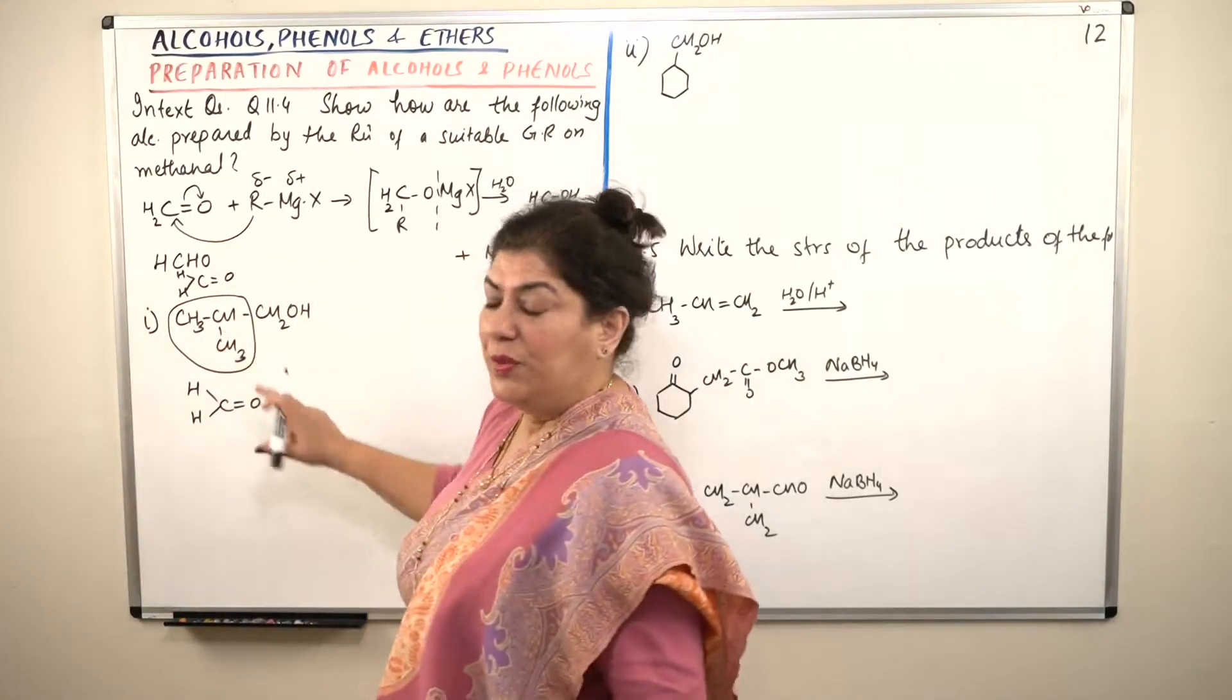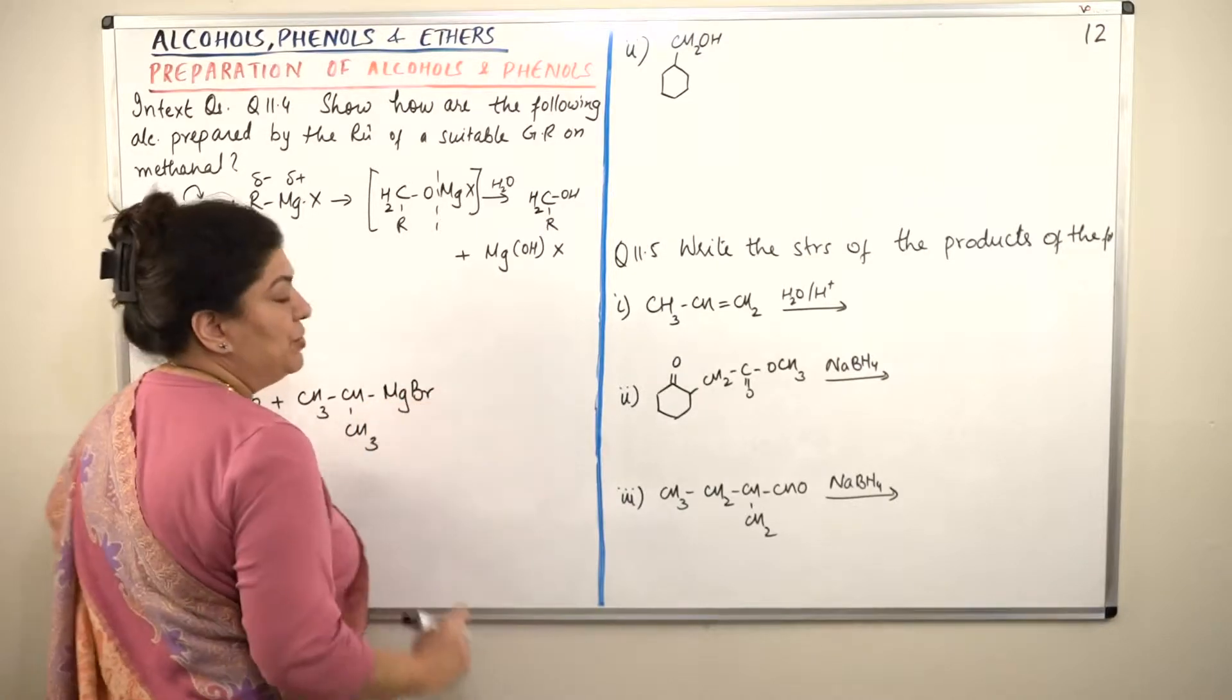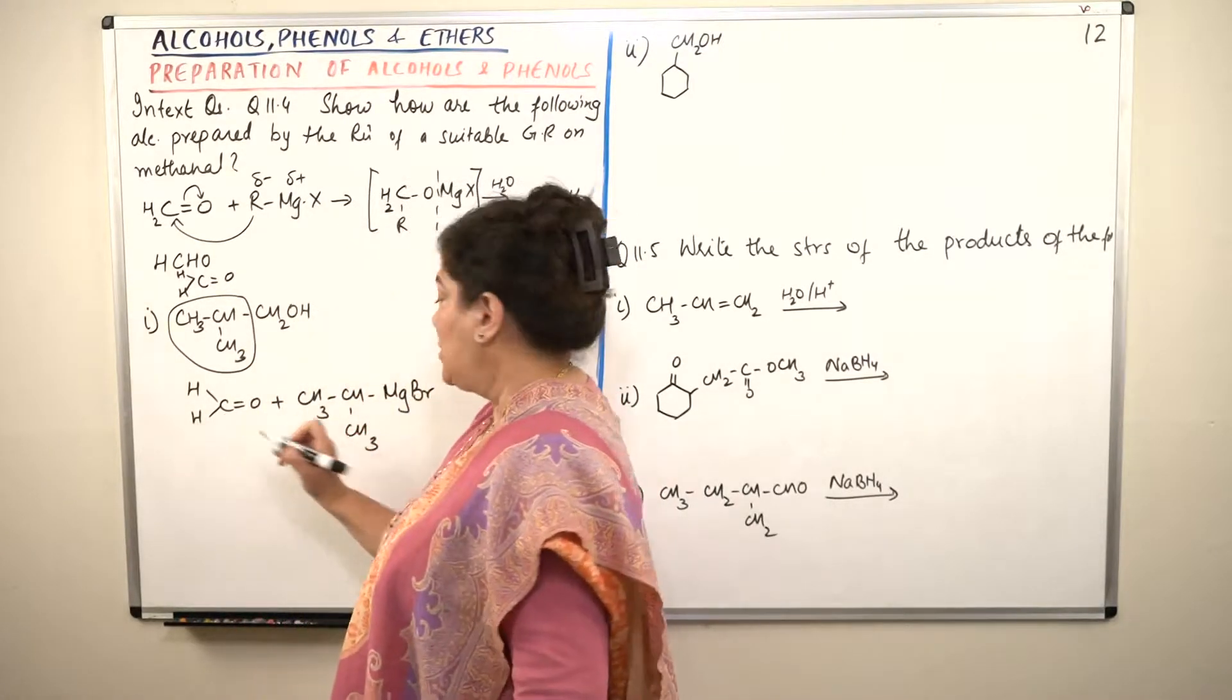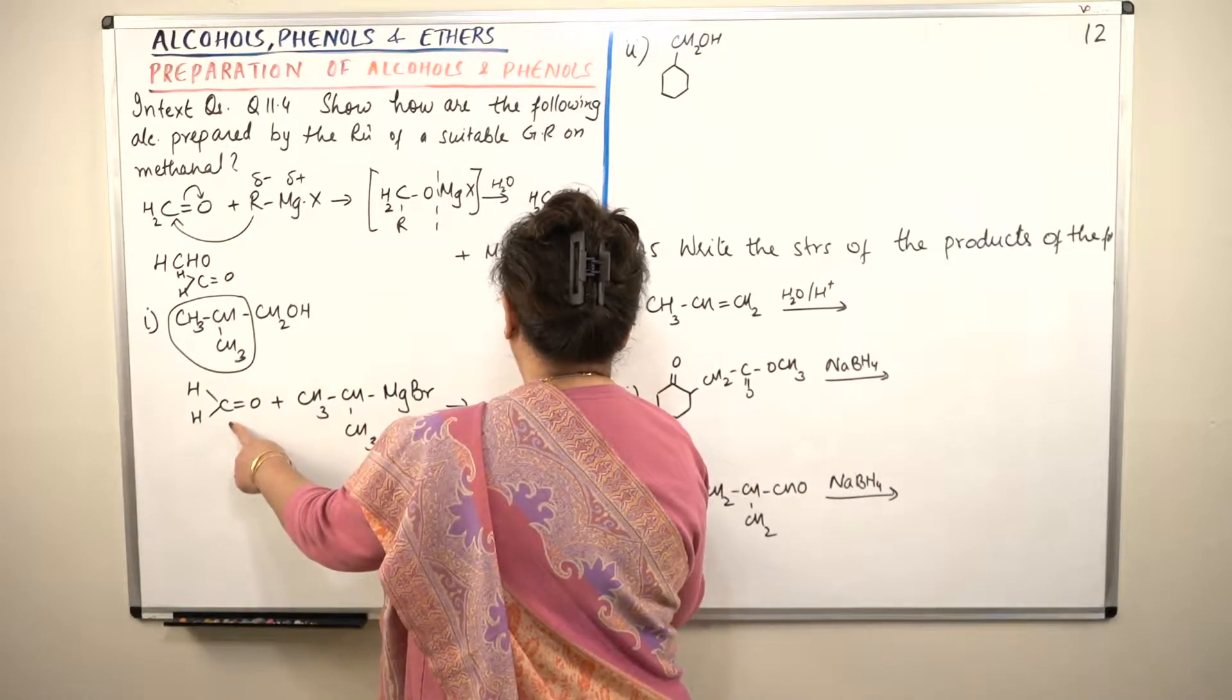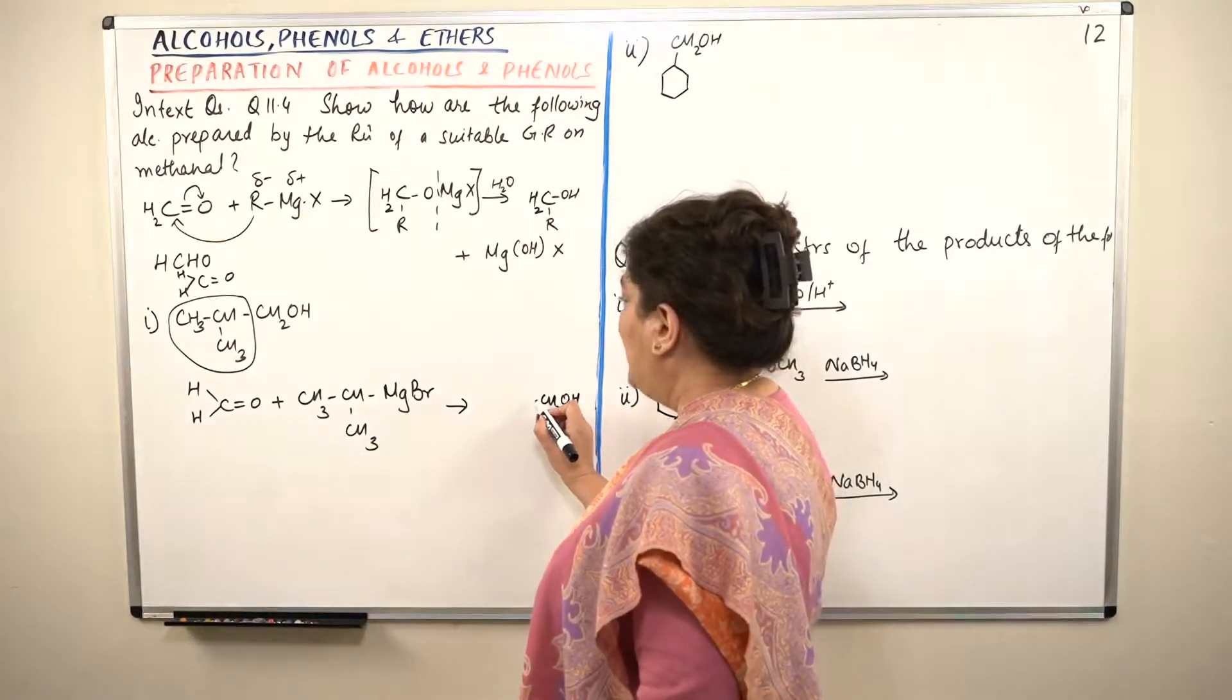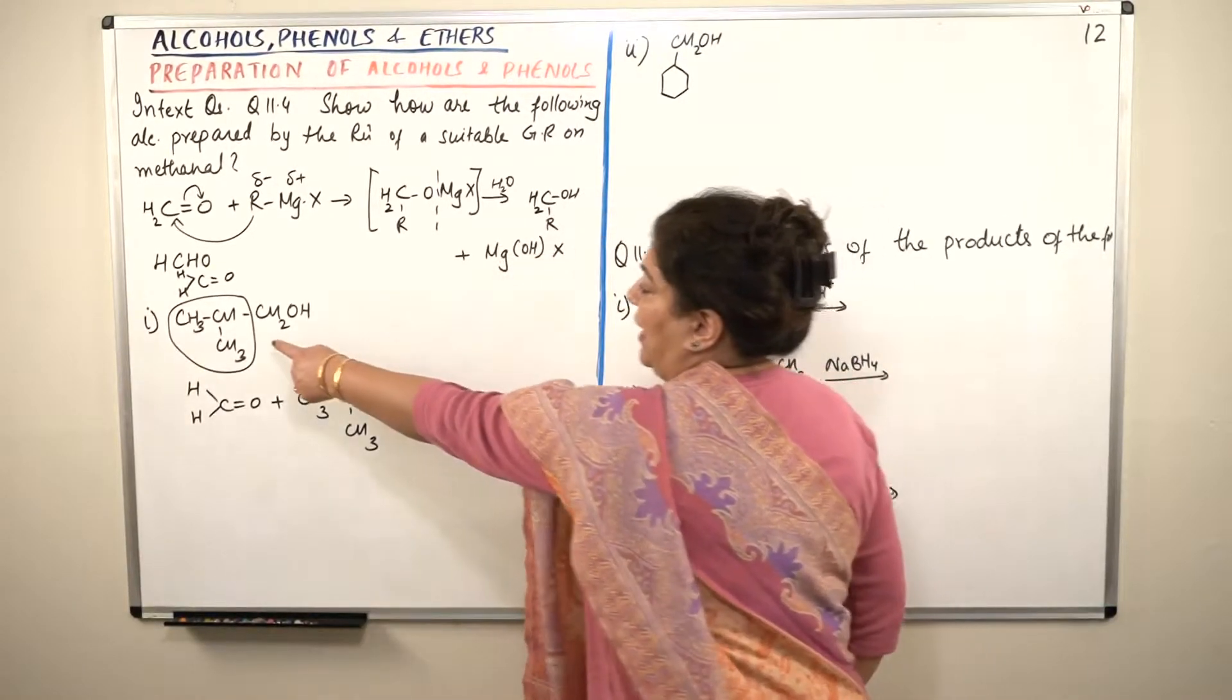So let us write the Grignard reagent with this. If this is R, I write it as such CH3-CH-CH3 and here you'll get Mg and let's take a bromide MgBr. Now do you see what is going to happen? When the oxygen, this electron goes here, the R comes and attaches itself to this carbon. So now I can write this as CH2OH. I write this. This is CH2 and O, hydrogen got attached here and this alkyl group has attached itself to the carbon. Which part is going to attach itself to the carbon? This CH part. So I write the CH here. It has a branch CH3 here and a CH3. And this is the product that I wanted.